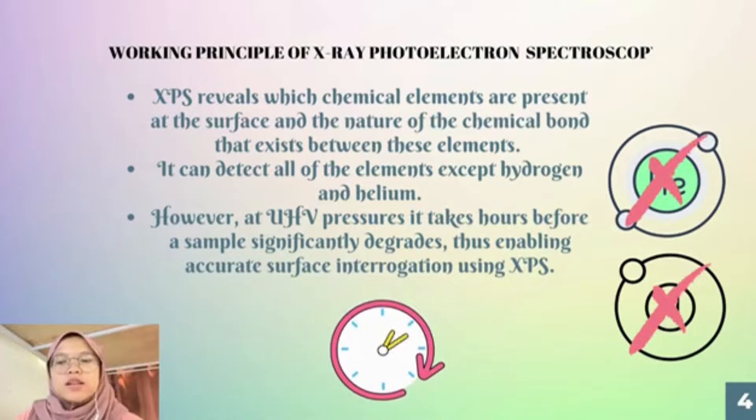The process only occurs at the top of a few atom layers of materials such as heterogeneous catalysts, adsorption, corrosion, and adhesion. Examples of XPS instruments are ultra-high vacuum system, electron analyzer, and ion gun.